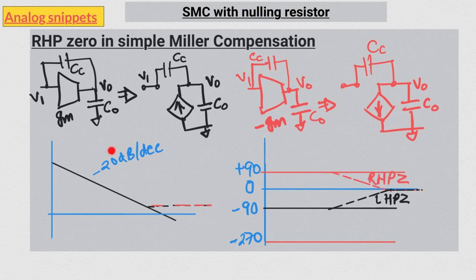Both types of zeros have the same magnitude plot, but they differ in their phase plots. So this was another way to understand why simple Miller compensation creates a right-hand plane zero. The reason is basically the inverting gm stage and the feed forward through the Miller capacitor.